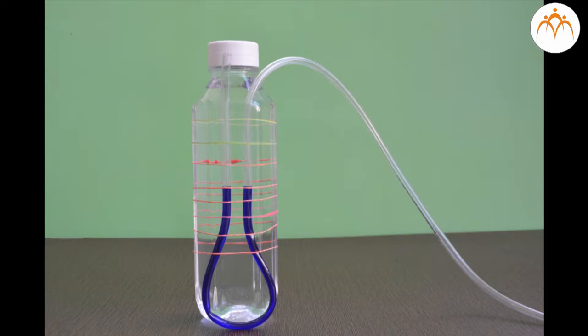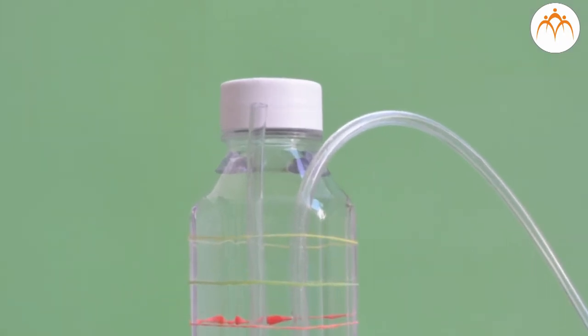This arrangement is used for measuring pressure. It is called open tube manometer. One end of the U-shaped tube containing liquid is open to atmosphere, P0.